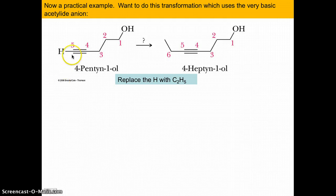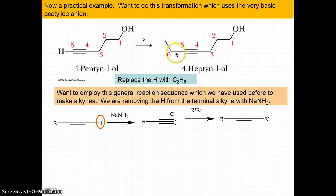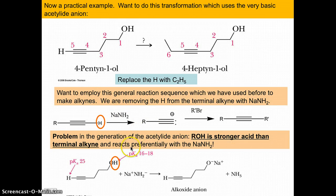Here's an example: we want to alkylate an alkyne — deprotonate this terminal hydrogen and add on an alkyl group. The base we generally use for this is sodium amide, a relatively strong base. We then add an alkyl halide to do the alkylation. The problem is that if we employ sodium amide, we have to consider pKa values: the alcohol O-H is around pKa 16 and the alkyne C-H is around pKa 25, so the alcohol is going to be deprotonated first and we don't get the reactivity we want.